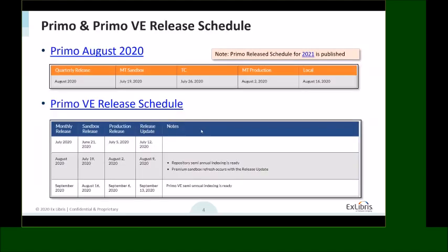Before going into each feature, I want to mention the timeline. Yesterday the release landed on your multi-tenant sandbox. Next week is for Total Care customers. On August 2nd, multi-tenant production will receive it, and the dedicated and local customer installations will be available on August 16th. We have also published the Primo release schedule for 2021 in the Knowledge Center.